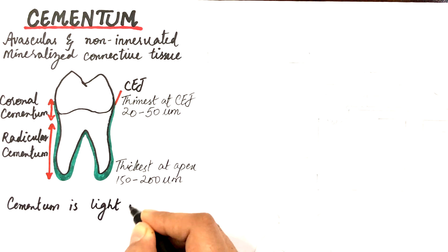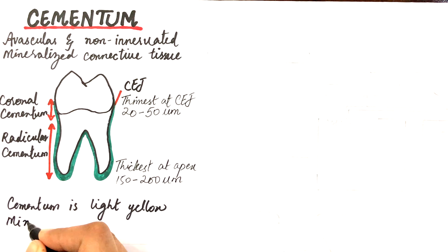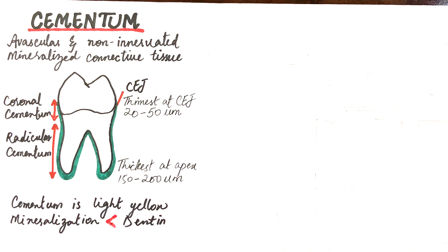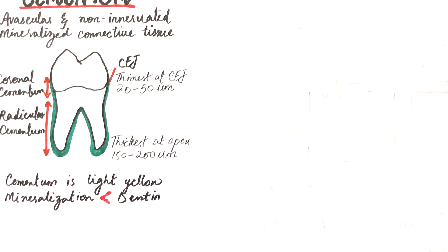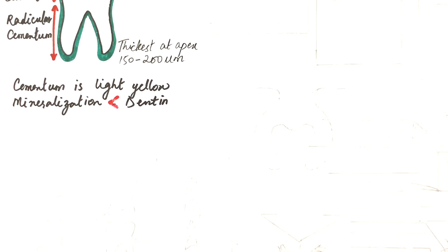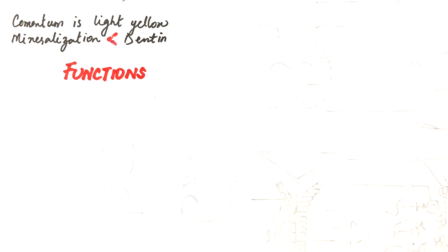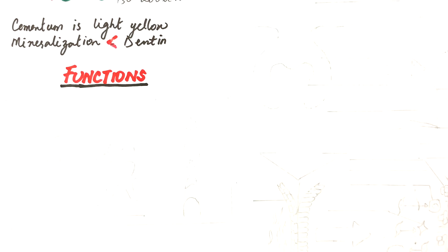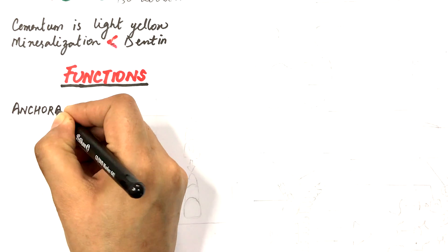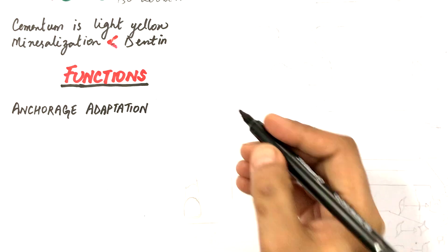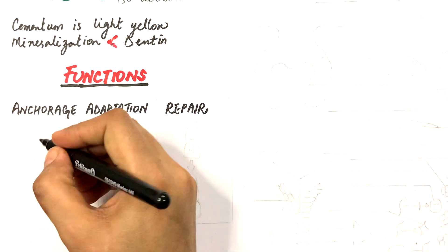Cementum is light yellow and comparatively less mineralized than dentine. Although it is yellow in color, in this video I will be drawing it in green to distinguish it. The main functions of cementum are anchorage, adaptation, and repair.